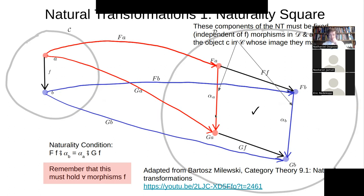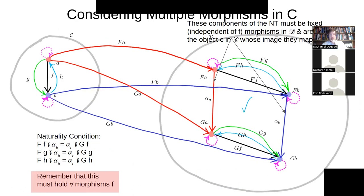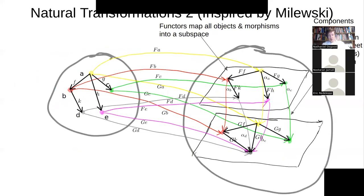It's worth emphasizing that we have components of the natural transformation for every object in the source category — telling us how F maps it versus how G maps it, like translating a word from Farsi to Chinese. And we have a naturality square for each and every such morphism.